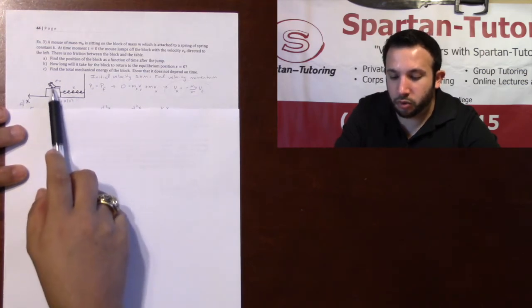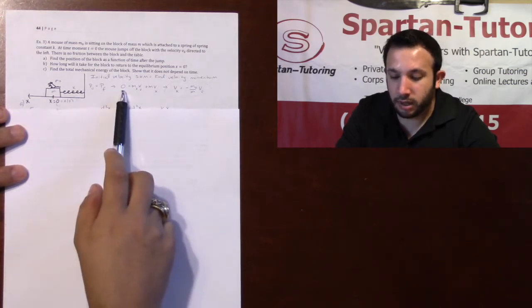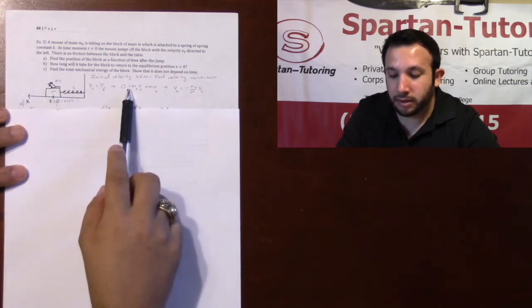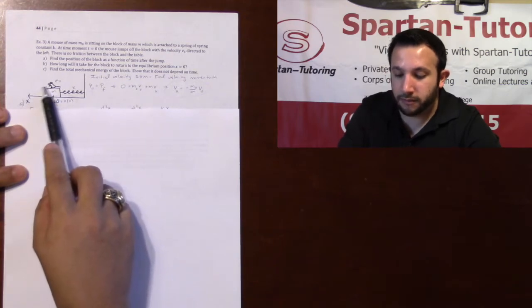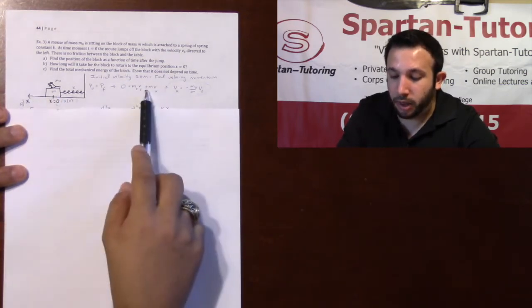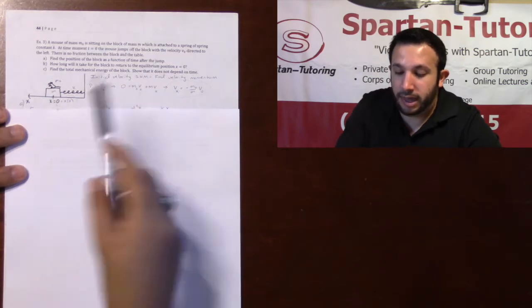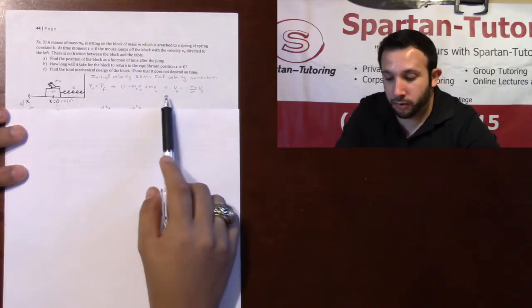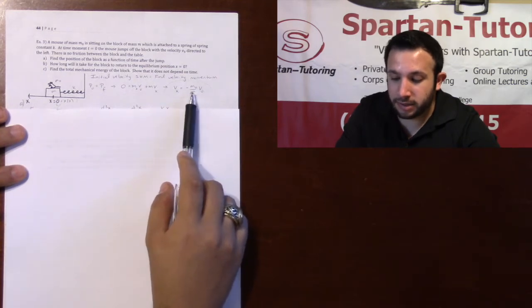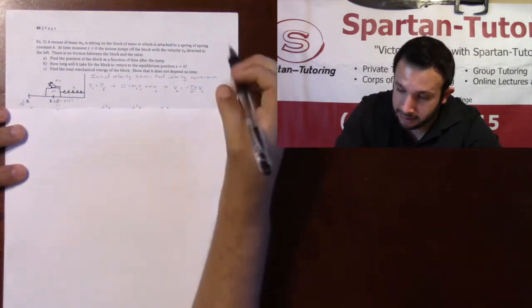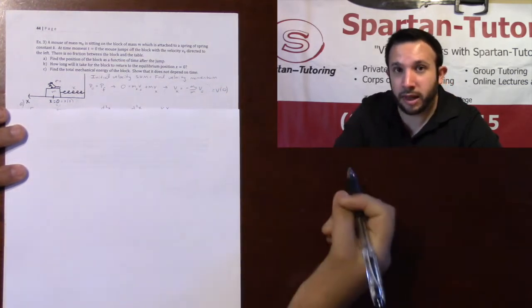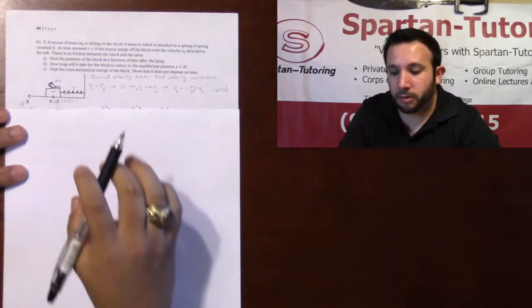And so if you do p0 equals pf, initially both were just chilling out. Initially there was no momentum. But then the mouse with mass m0 jumped off with some v0, and then the block went with some vx. I don't know what vx is. That's what we're solving for. vx is going to be negative m0 v0 over m, and this is your initial velocity of simple harmonic motion.